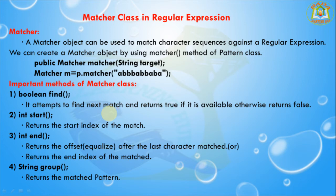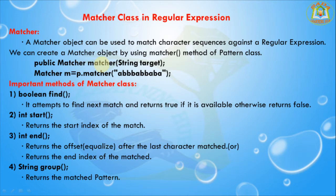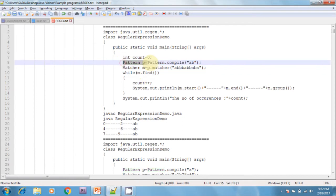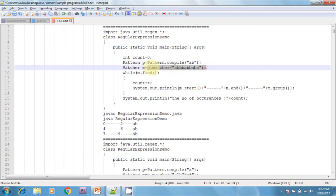I am creating a Matcher object by using the matcher method. This method is available in the Pattern class. Here, p is the Pattern object. So: Matcher m = p.matcher(inputString). This is the string — the character sequence to match. I am creating a Pattern object using the compile method, which is static and returns the Pattern object. Then I call p.matcher, which returns the Matcher object.